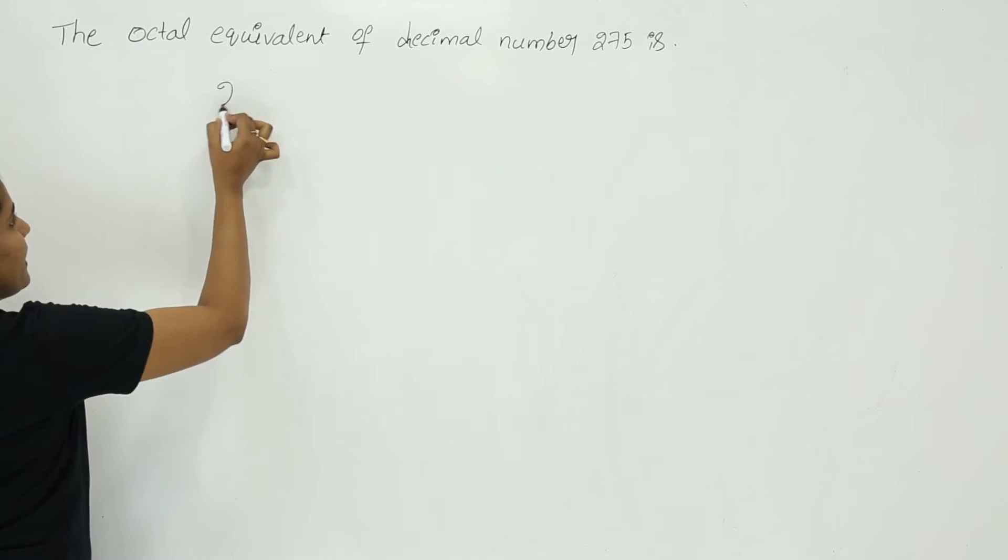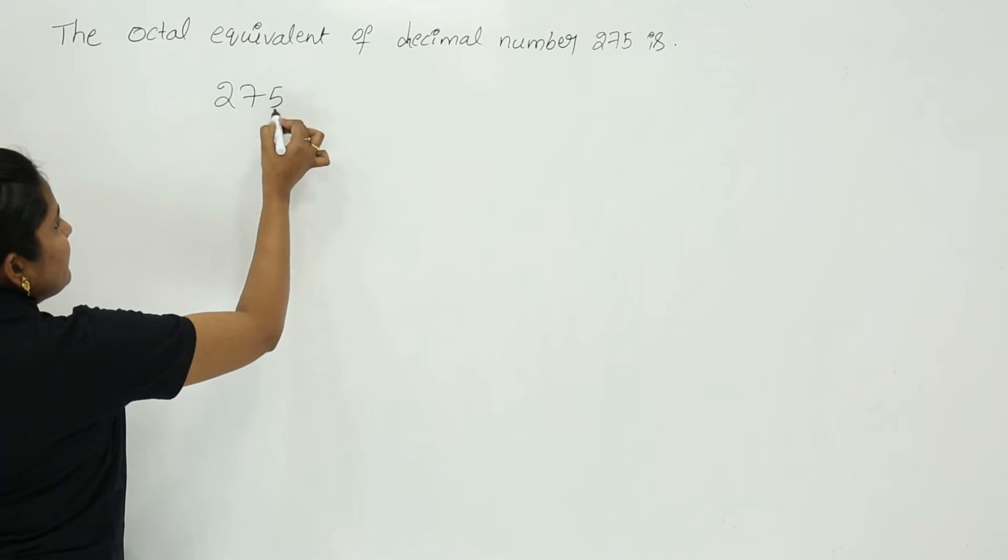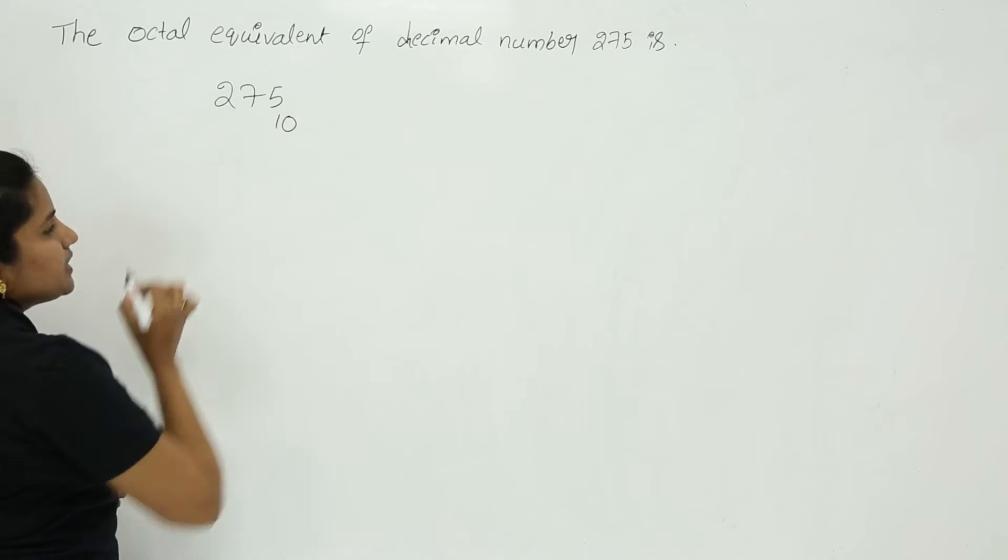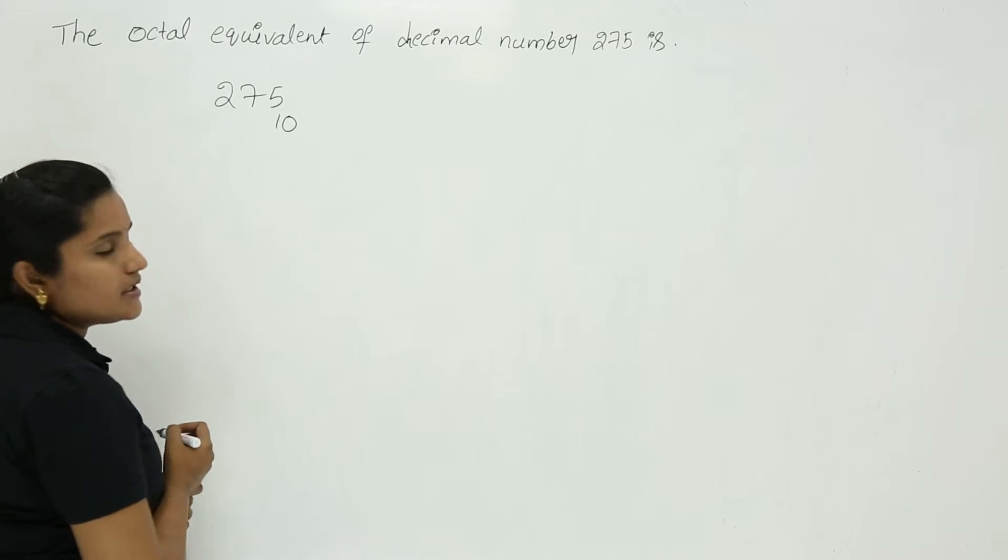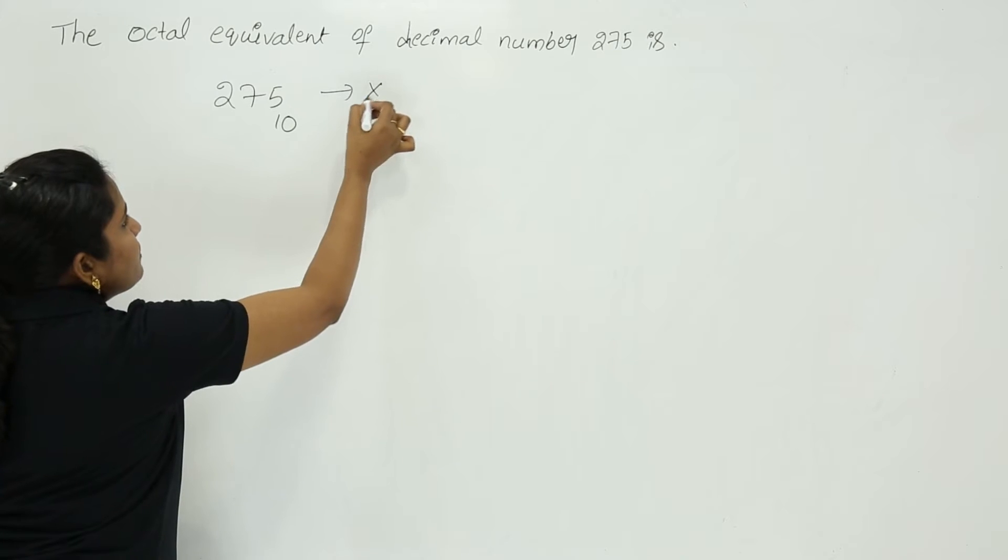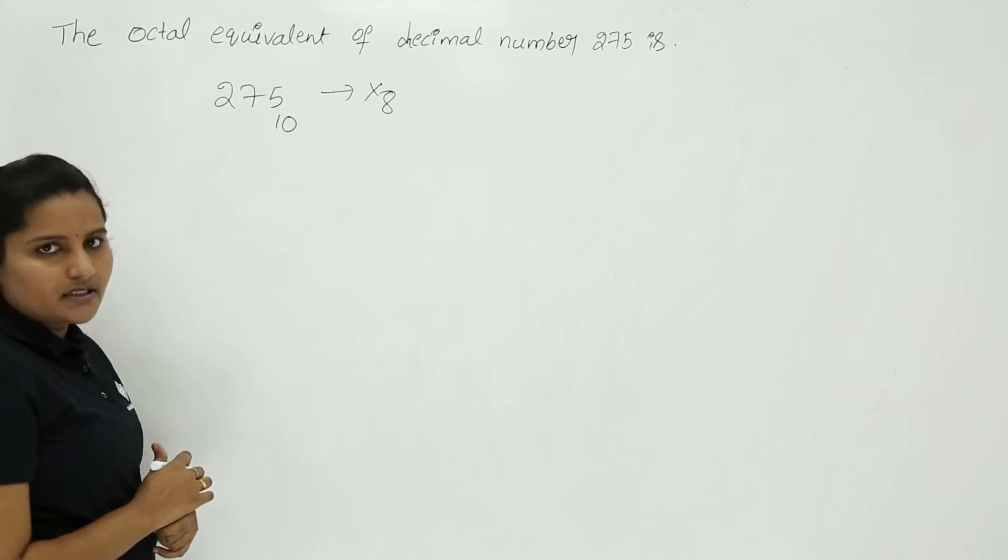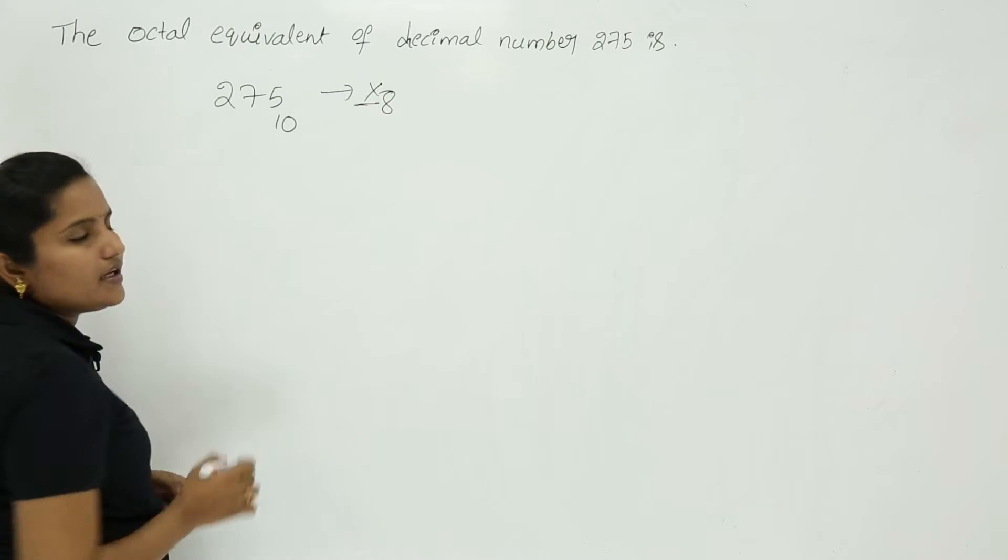Here we need to find out the octal equivalent of the decimal number given. The given decimal number is 275. We need to find out the octal equivalent for this. We need to find out x value for this.